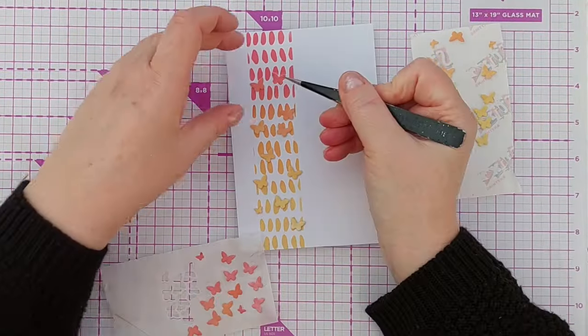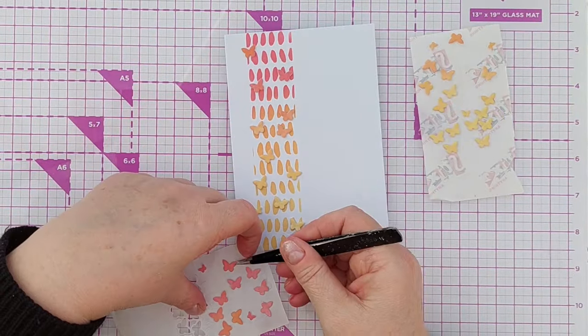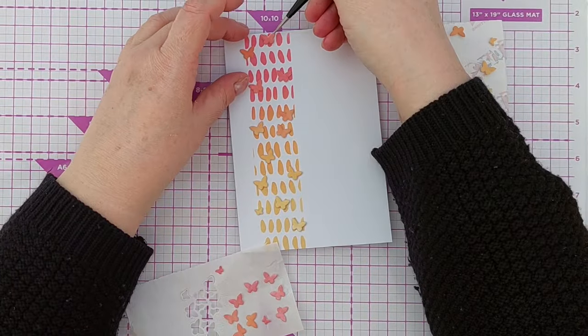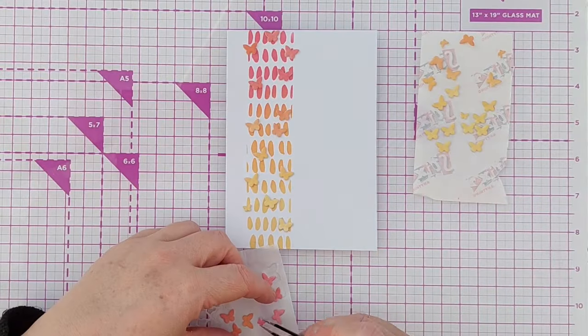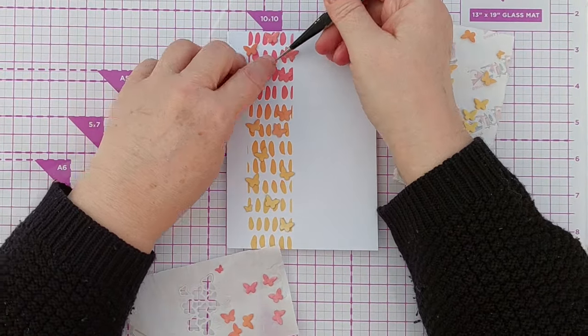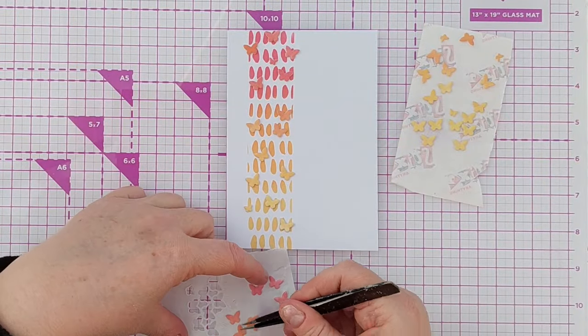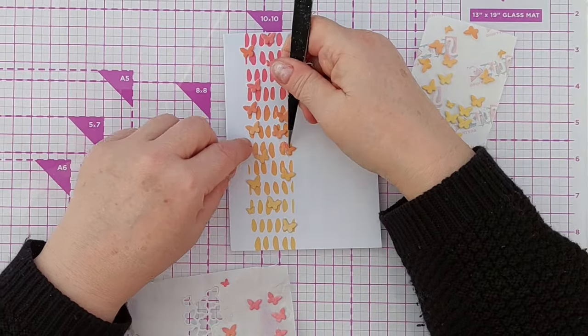The main difference is the butterflies aren't popped up on foam, they're just stuck straight onto the card, and also the stenciling is in large areas and it does look a little less busy. So I think the longest part of making this card was sticking all these butterflies down in a pleasing arrangement.